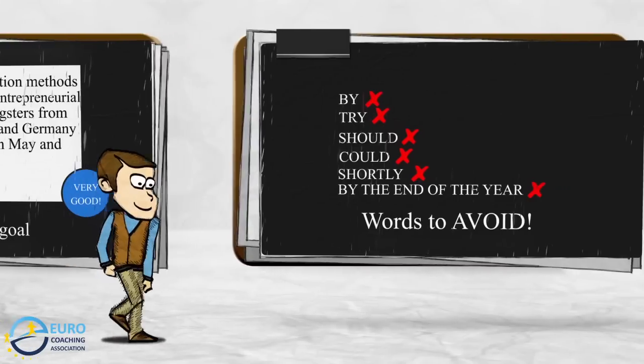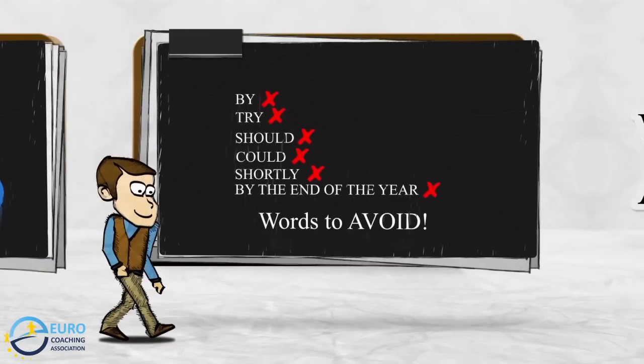When writing SMARTER goals, you should avoid these words: buy, try, should, could, shortly, by the end of the year. Remember, SMARTER goals say what you are going to do, when, and how you are going to do it.